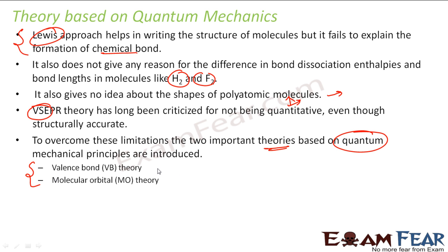Valence bond theory generally gives the shape, and molecular orbital theory is also for shape but generally gives the properties. Properties of molecules: whether it is paramagnetic, what is the bond length, whether it's stable or not.